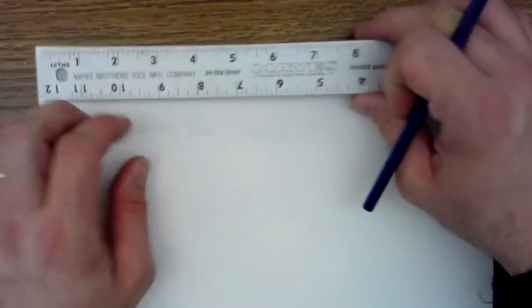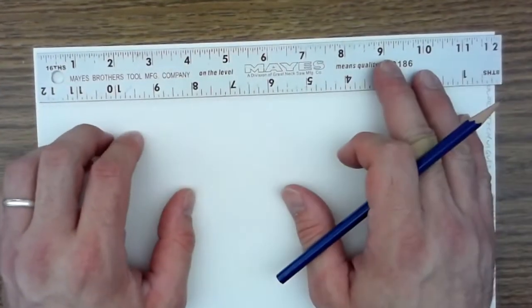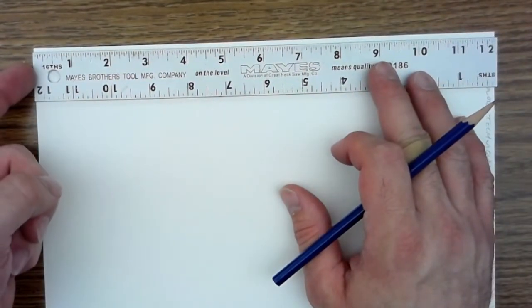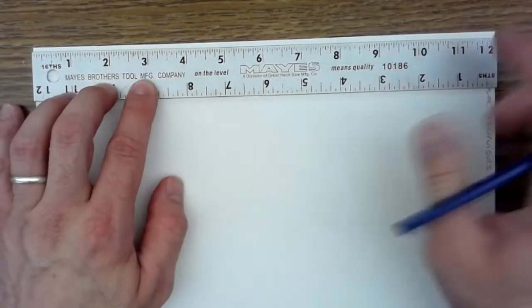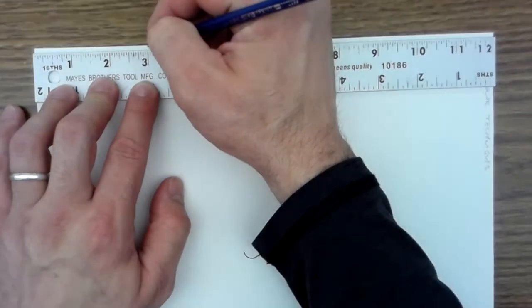Now we want to divide the paper into four sections. So it's 9 by 12 paper. I'm just going to take a ruler and line it up even with the page. I'm just going to make some marks. Obviously, four sections are three inches.